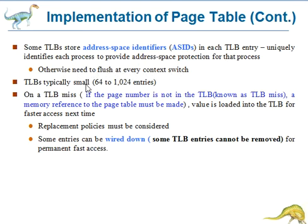The TLB is typically small, between 64 and 1024 entries. If the TLB does not support separate ASIDs, every time a new page table is selected for each context switch, the TLB must be flushed or erased to ensure that the next executing process does not use the wrong translation information.